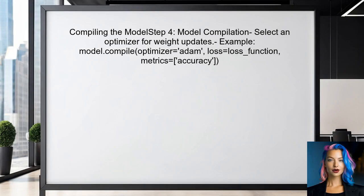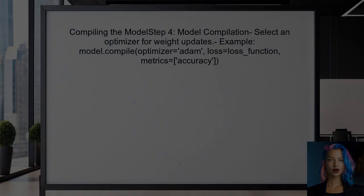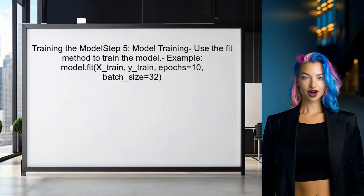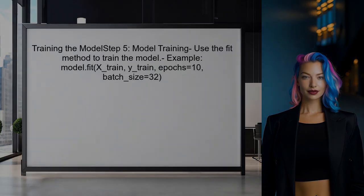Now, the user can compile the model by selecting an optimizer. The optimizer is responsible for updating the model's weights based on the gradients calculated from the loss function. Finally, the user can train the model using the fit method. During training, TensorFlow automatically performs backpropagation by calculating gradients and updating weights based on the optimizer.